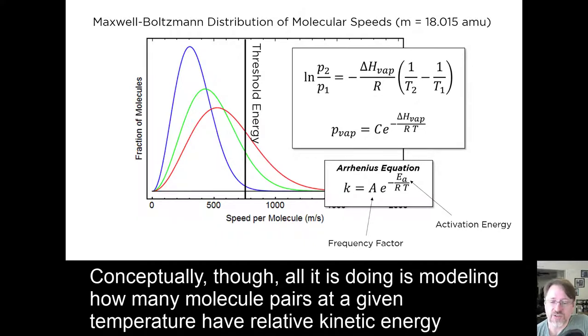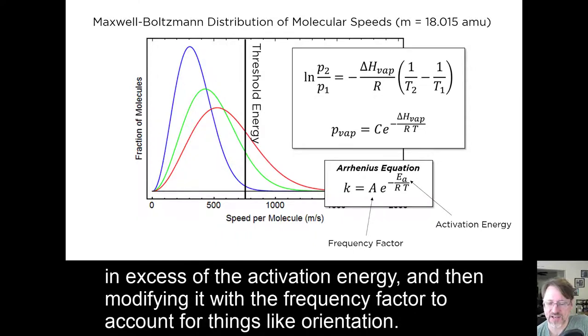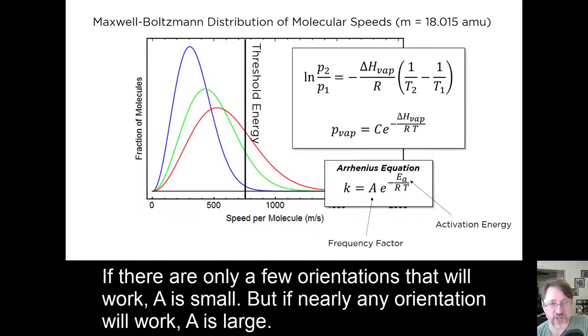Conceptually, though, all it is doing is modeling how many molecule pairs at a given temperature have relative kinetic energy in excess of the activation energy, and then modifying it with the frequency factor to account for things like orientation. If there are very few orientations that will work, A is small. But if nearly any orientation will work, A is large.